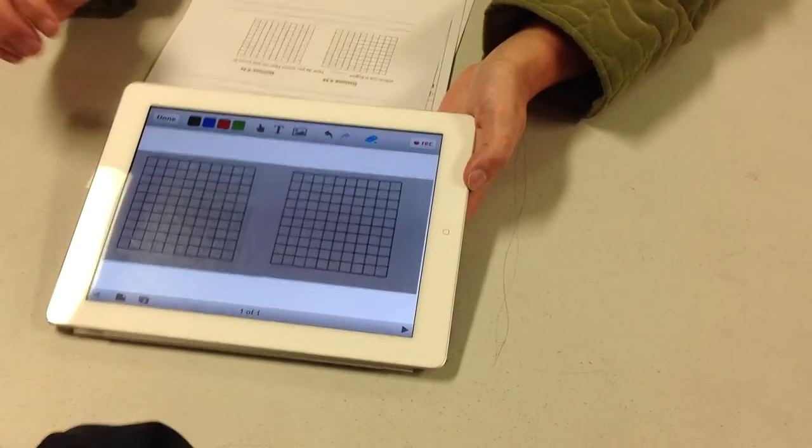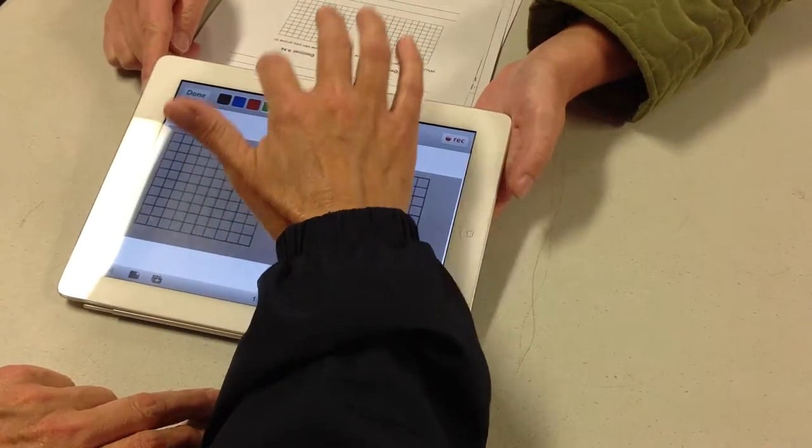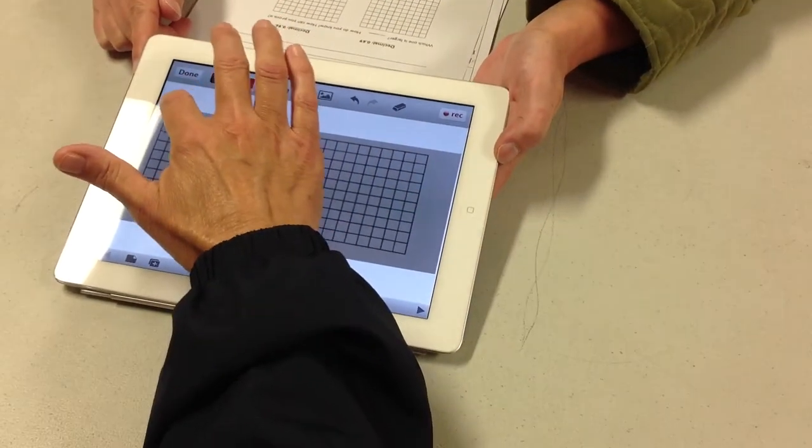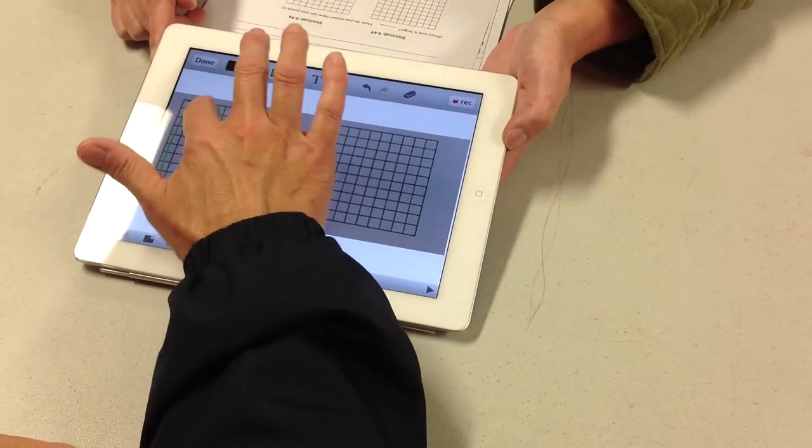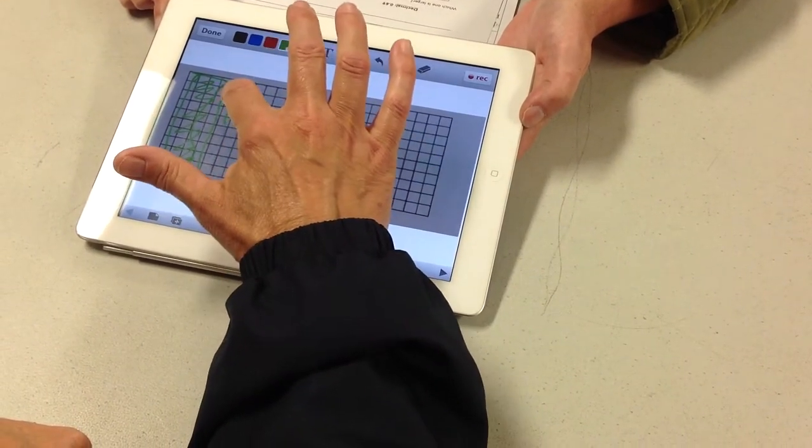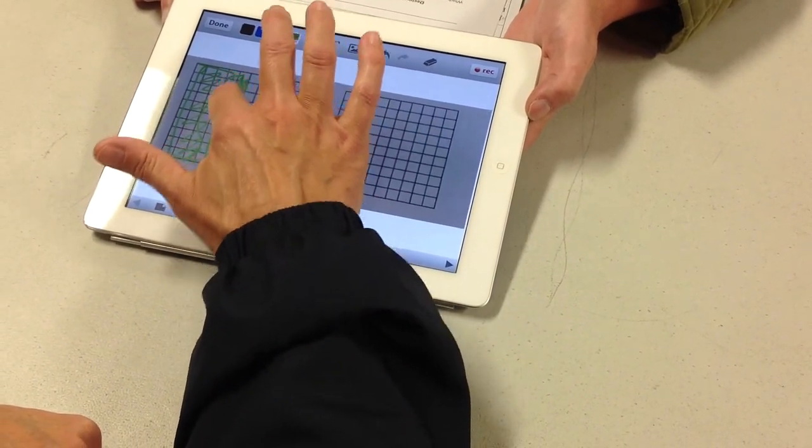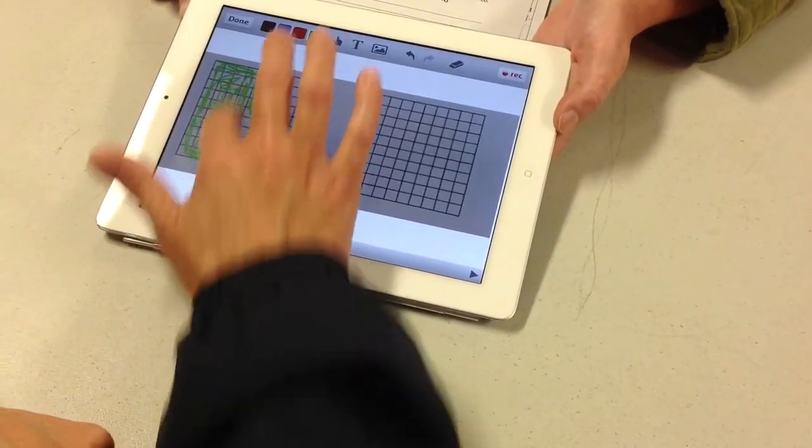So what you need to do is colour in 0.45 on the first one. So that would be 0.45 would be like 4... Yep, that's 0.45 I reckon. Is that right, Miss? Yep, that's right.